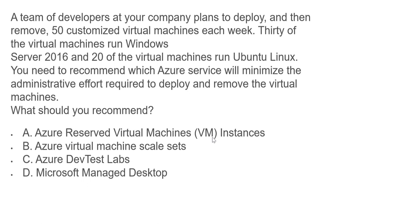The first option says Azure Reserved VM Instances. Reserved VMs are a pricing type where you commit for three years to reduce cost significantly — there is no automation involved. This is a pricing lever and not relevant to this question. Option B is Azure VM Scale Sets, which are similar to auto scaling groups in AWS — when load increases you spawn multiple VMs, and when load goes down the scale sets scale in. This could be a probable option, but let's look further.